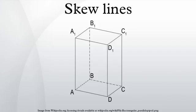Two lines that both lie in the same plane must either cross each other or be parallel, so skew lines can exist only in three or more dimensions.